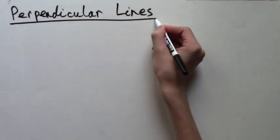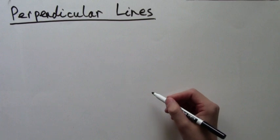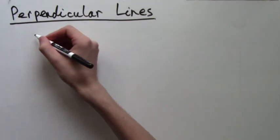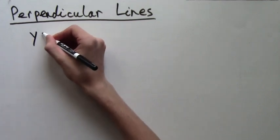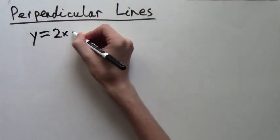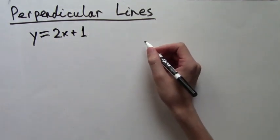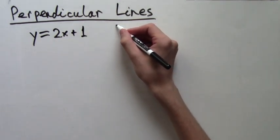We'll do this by solving an example. Let's say we have the function y equals 2x plus 1. And we are given the point (2, 0).